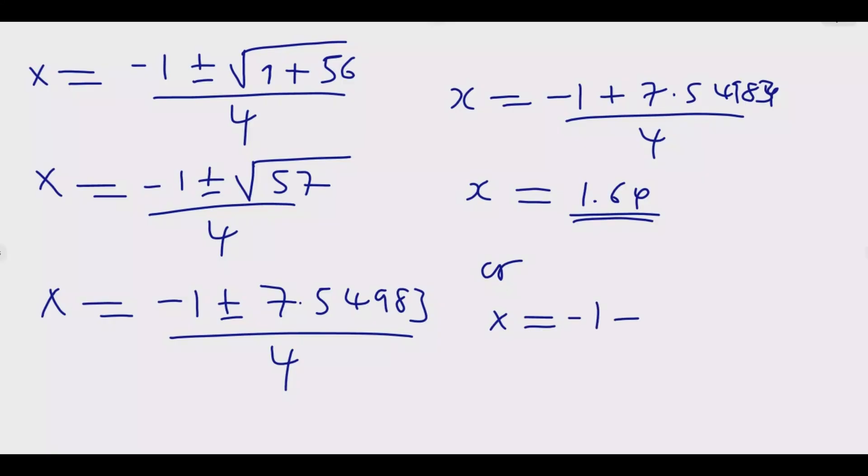This tells me that x is equal to minus 1 plus 7.54983 over 4. When I simplify this one, I'm going to get x equals 1.64 or x equals negative 2.14.